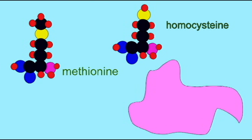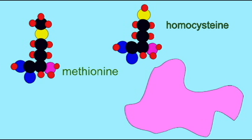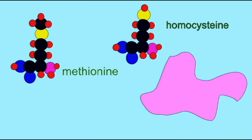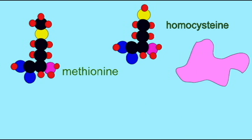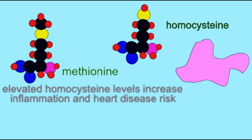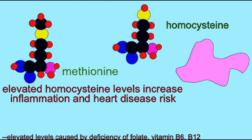Plasma levels of homocysteine can be elevated in normal individuals because of an insufficient amount of certain vitamins such as folate, vitamin B6, and vitamin B12, or because of mutations in the genes for the enzymes which metabolize homocysteine.